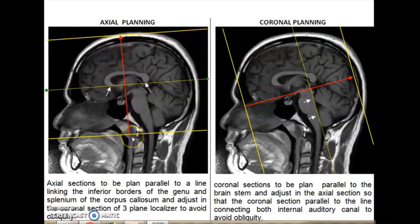It is covered from the base of the skull to the vertex. Similarly, in the coronal plane, the coronal plane is parallel to the brainstem and adjusted to the brainstem. It should be adjusted in the axial section so that the coronal section is parallel to the line connecting both the internatal areas to avoid angulation.